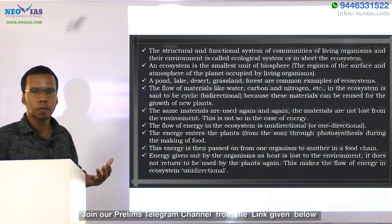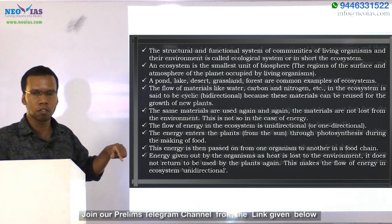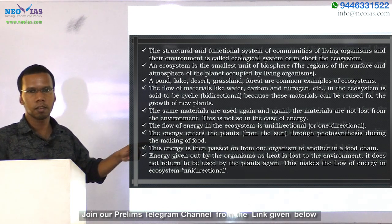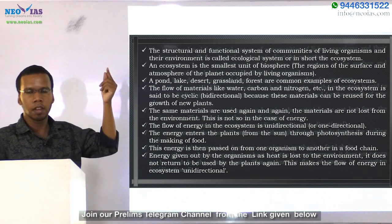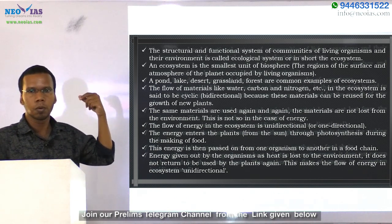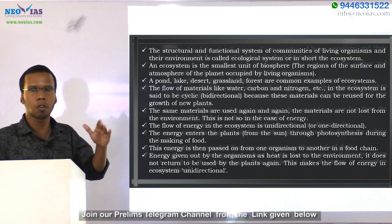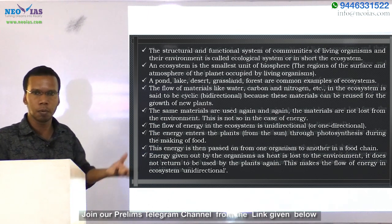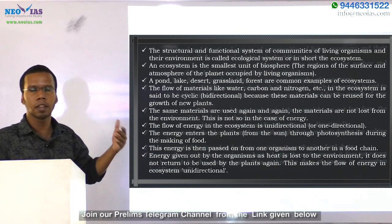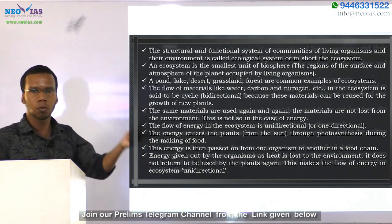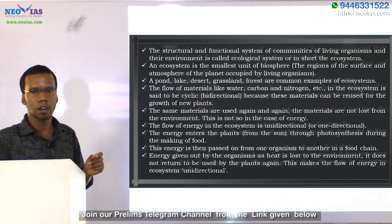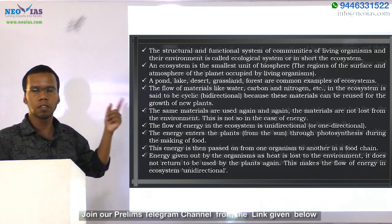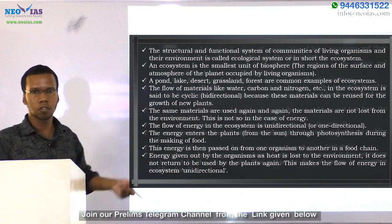By this food chain, energy is transferred through the ecosystem and it will be unidirectional. We get sunlight from the sun, which is converted into chemical energy by plants through photosynthesis. That energy is used by herbivores, which are then eaten by carnivores, and so on. At each trophic level, energy is reduced, which is why energy transfer is always unidirectional in an ecosystem.